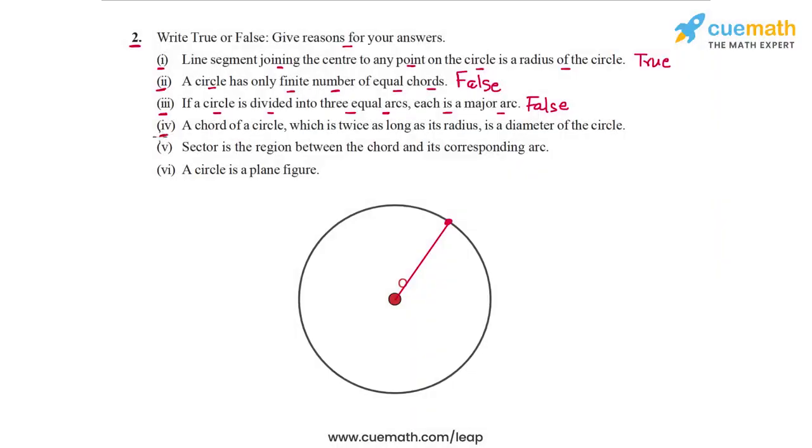Now, in part four, the statement says that a chord of a circle which is twice as long as its radius is a diameter of the circle. So this statement is actually true. If you have any chord passing through the center of the circle, like this, it's a diameter of the circle. And this is twice of the radius of the circle, because the radius is a segment joining the center to any point. So if you double this, you get a diameter of the circle. So statement four is true.